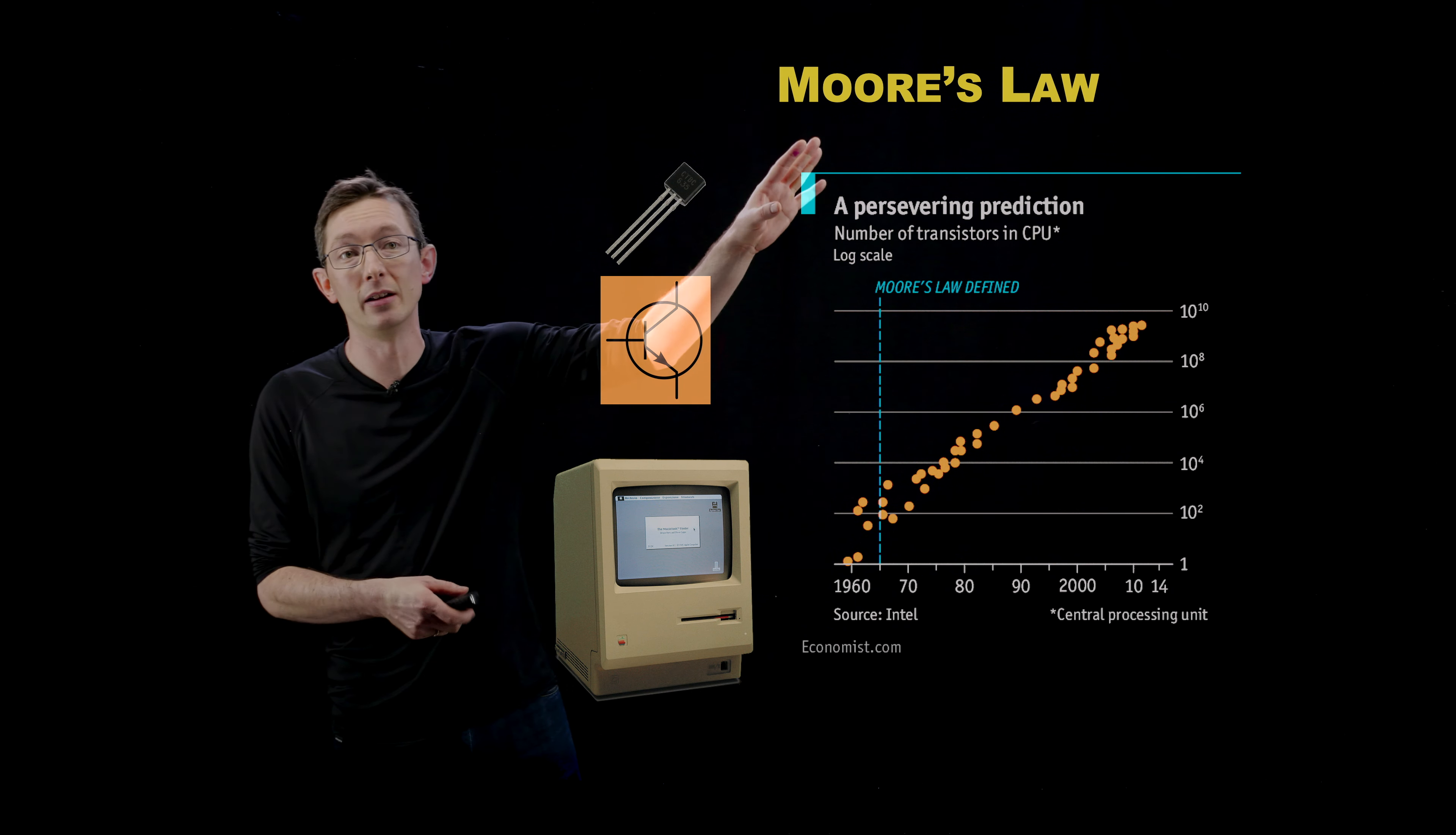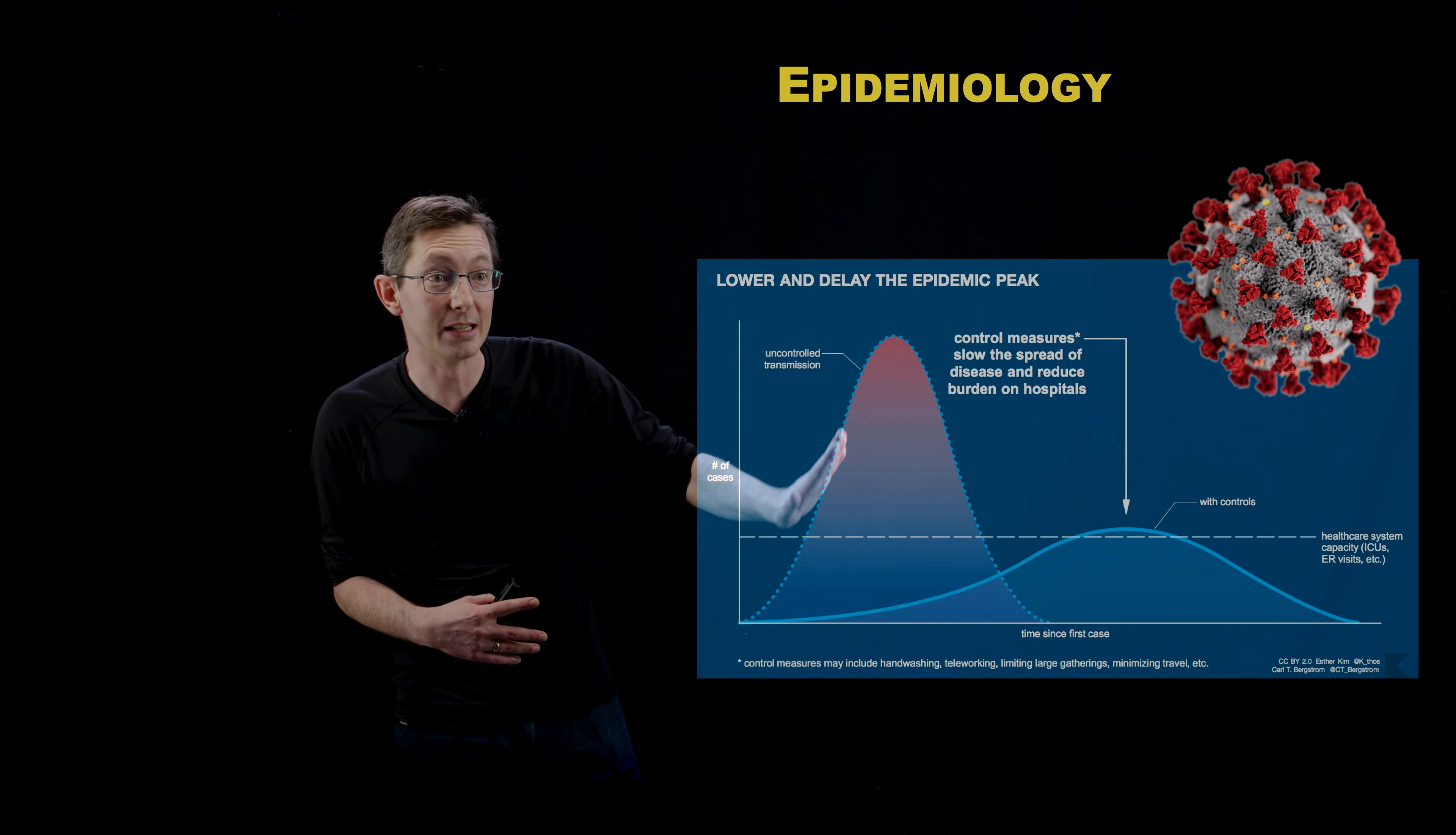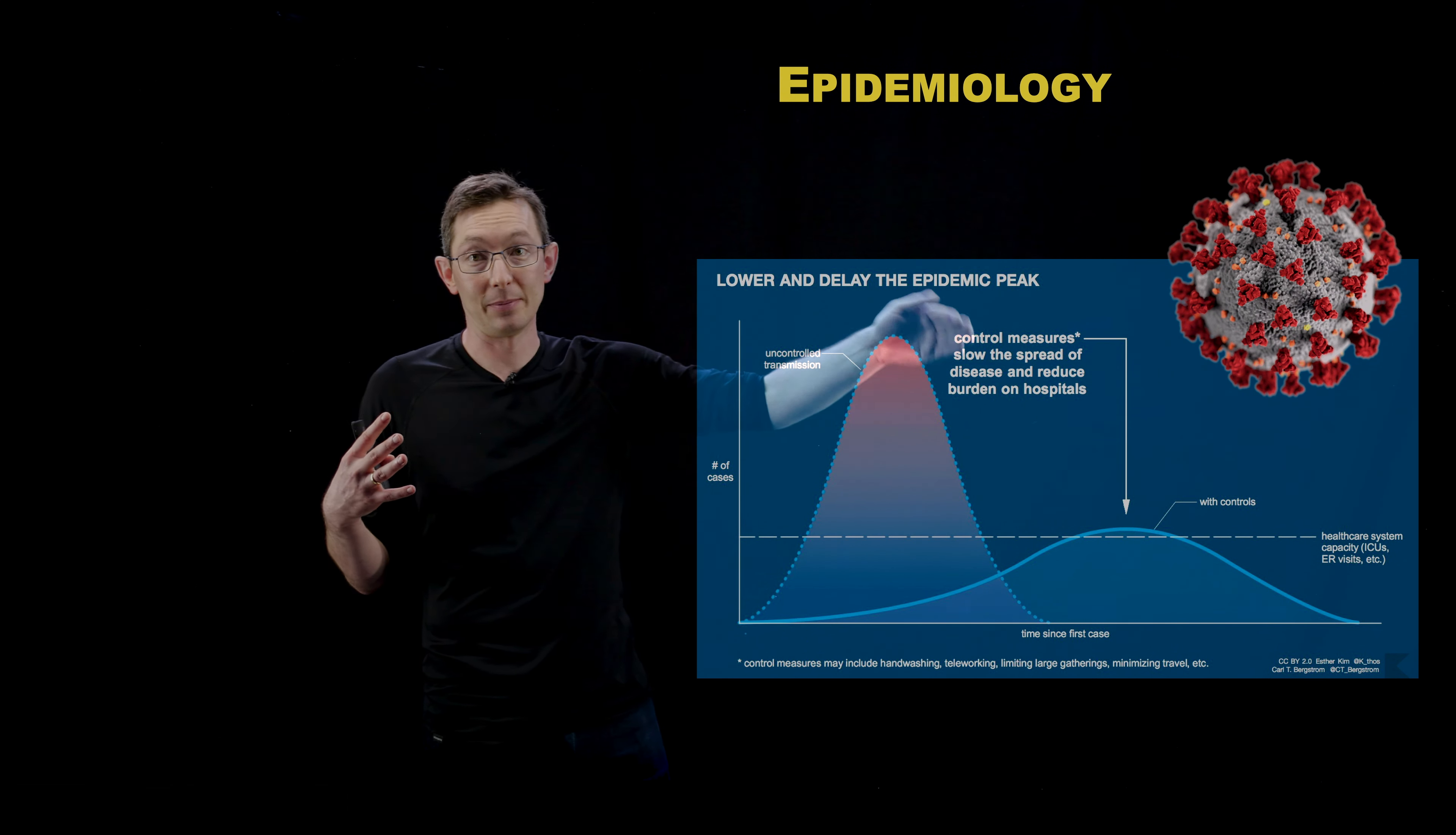I'm also going to do a whole series on epidemiology and the spread of disease. And this is, for example, the flatten the curve of COVID-19 plot. And for short times, you see that viruses spreading through a population spread exponentially. And then eventually, as enough of that population is infected, it stops being exponential.